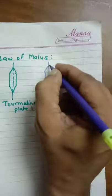And the second Tourmaline plate is arranged like this. These are the axes of the Tourmaline plates.